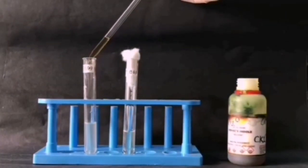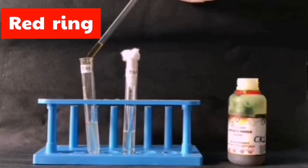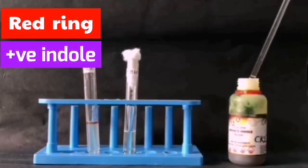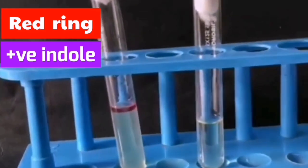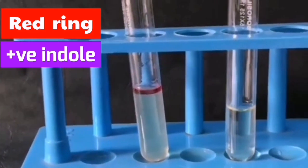After incubation, add one milliliter of Kovacs reagent. If it gives you a red ring, that means that indole is formed and this microorganism can produce tryptophanase enzyme. Then the result will be positive.